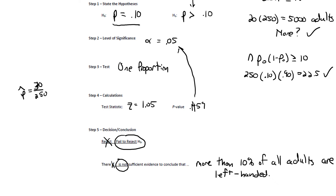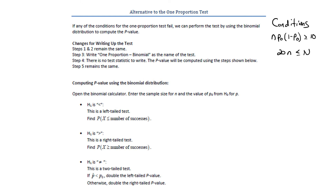Now let's see what happens when the conditions are not satisfied. If any of the conditions for the one proportion test fail, we can still perform the test by using the binomial distribution to compute the p-value. The first condition was n times p sub 0 times 1 minus p sub 0 must be greater than or equal to 10. Also, the sample size can't be more than 5% of the population size. If either condition fails, we switch to this alternative test.